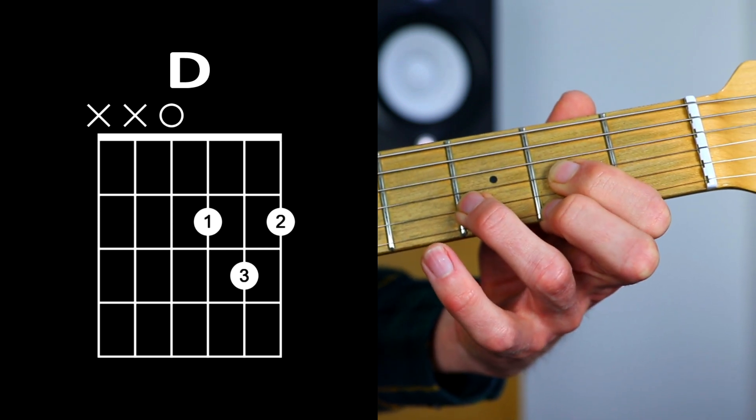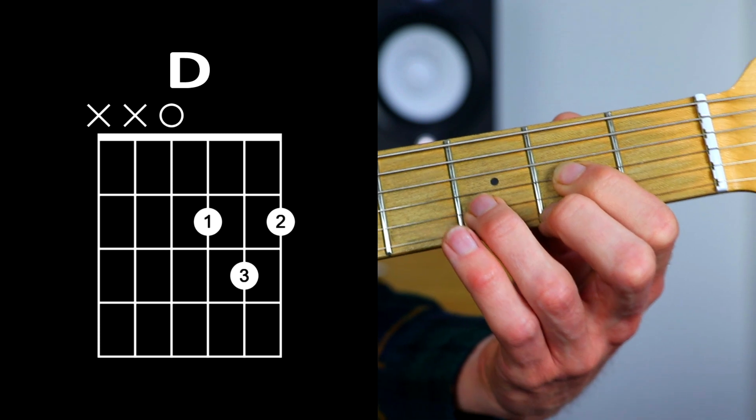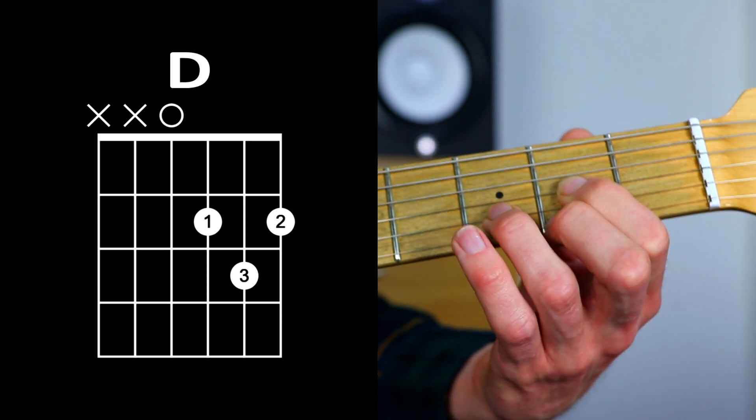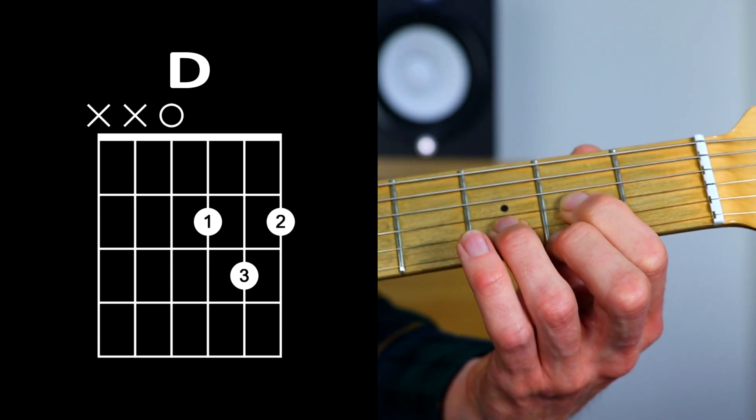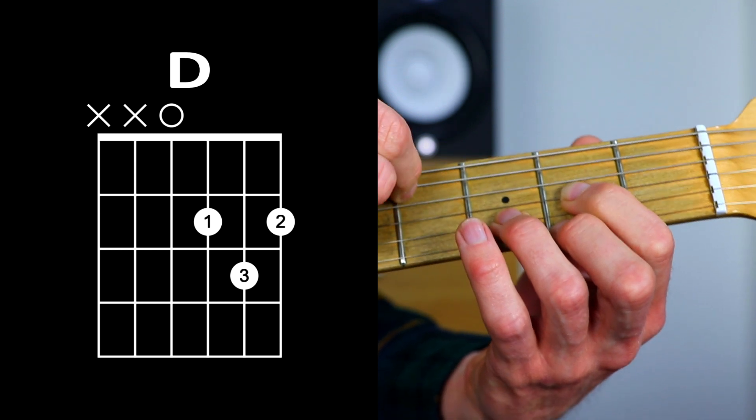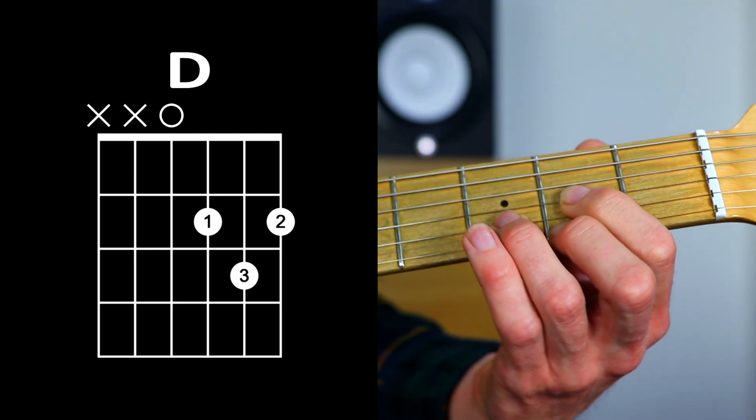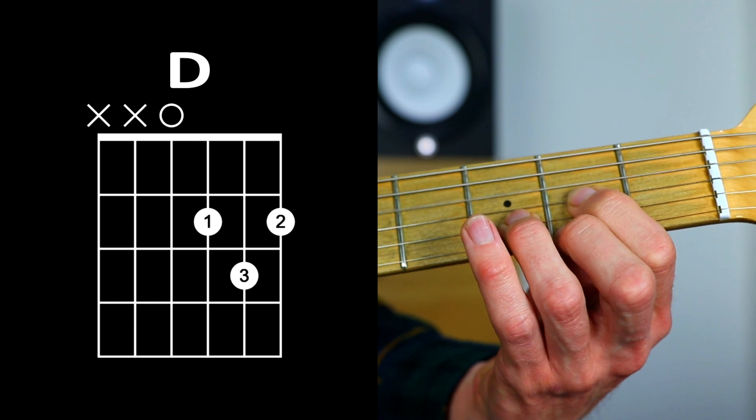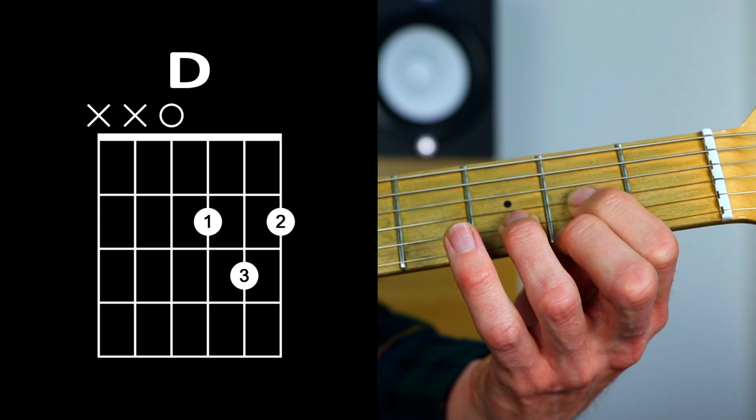For the D chord, the four notes that we play: because we're muting the first two strings, we're only going to play four strings—the D, the G, the B, and the high E string.